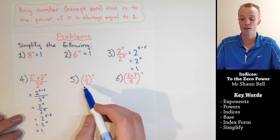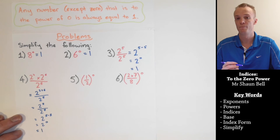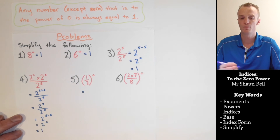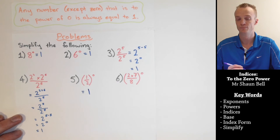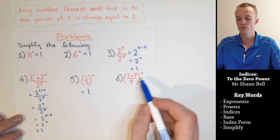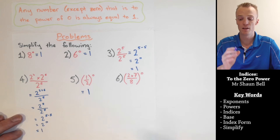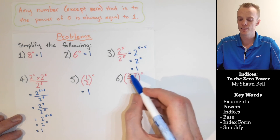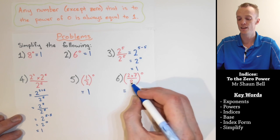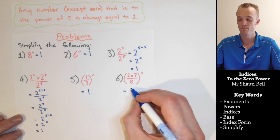What about question five? We've got a fraction to the zeroth power. A fraction is still a number, and any number to the power of zero is always equal to one, so a half to the power of zero equals one. For question six, we've got two times seven divided by eight, all to the power of zero. Any number that is not zero raised to the power of zero equals one. I can see that what's inside the brackets is not equal to zero, so this is a number to the power of zero, and it equals one.